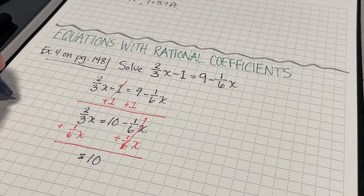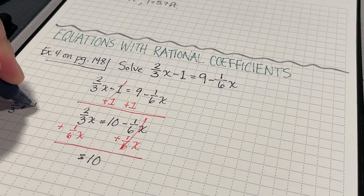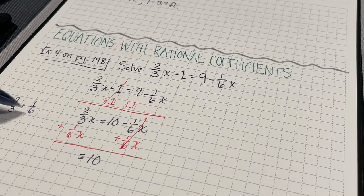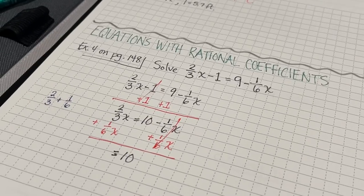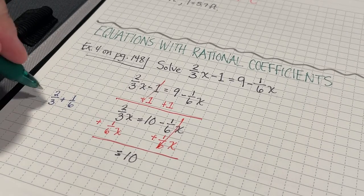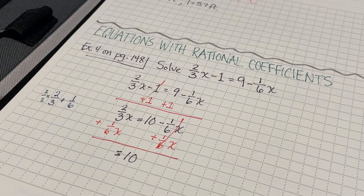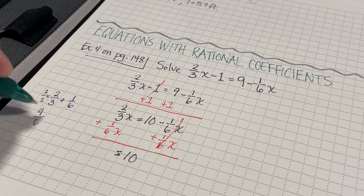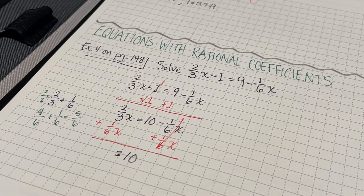So, I'm going to just work over here. I'm going to say two-thirds plus 1/6. So, I'm looking for a common denominator. Well, the common denominator between thirds and sixes is six. So, I know that if I multiply this by two over two, I'm going to get four over six plus one over six, which is going to be five-sixths. So, I know that I have five-sixths x.